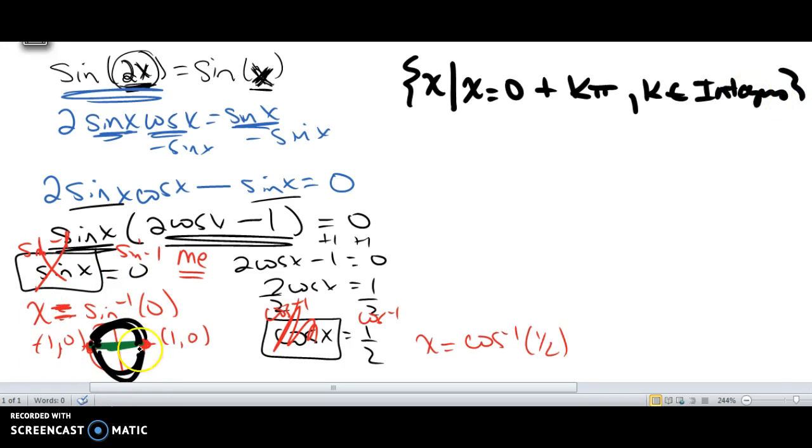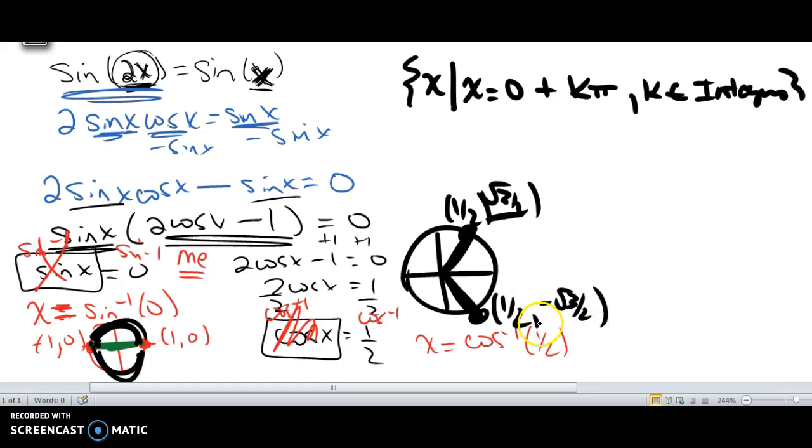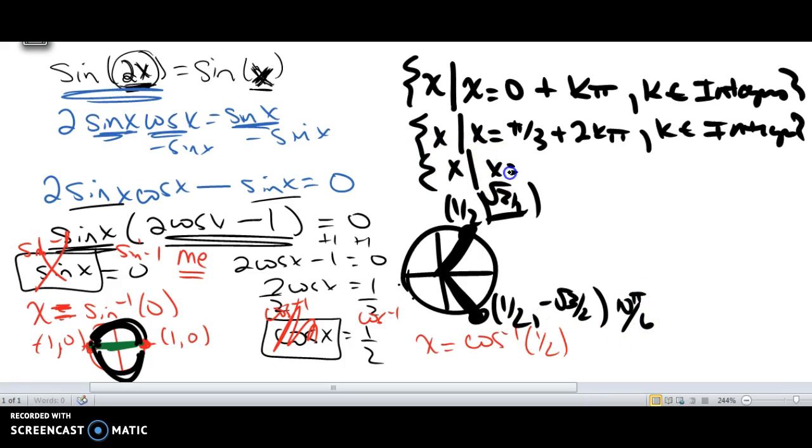Now I need to look over here. When is cosine a half? Here's my half, and if I reflect over the x-axis I get the same positive half. This guy is π/3. This would be 2kπ because I have to go all the way around to get back to it. This guy is 5π/3, so x such that x is 5π/3 plus 2kπ where k is an element of the integers.